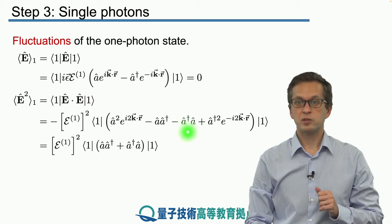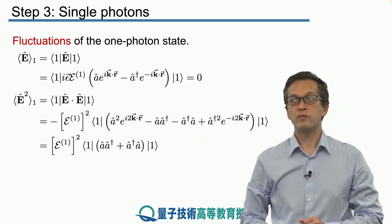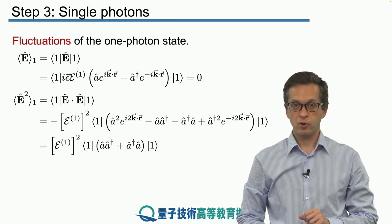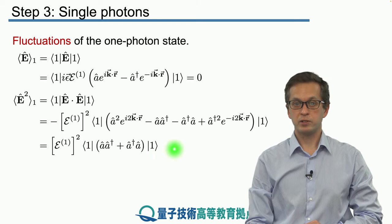But this time this term a dagger a does not disappear. Previously it vanished because we were applying it to the vacuum state. Now we are applying it to ket 1, the single photon state. So we obtain the following expression.